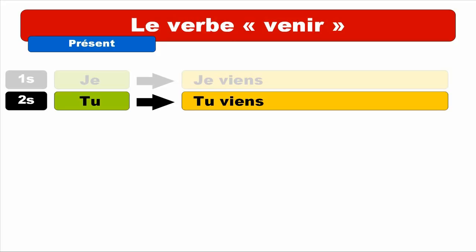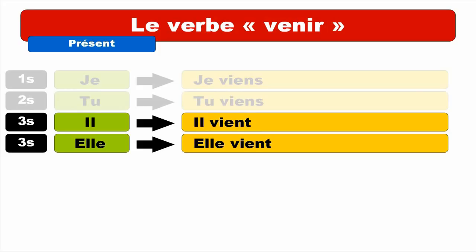Third person of the singular — IL masculine, ELLE feminine. Masculine form — IL VIENT. Repeat. IL VIENT. Final T is not pronounced, so you get the same form as for JE and TU. And then ELLE — same thing. ELLE VIENT. Repeat. ELLE VIENT.